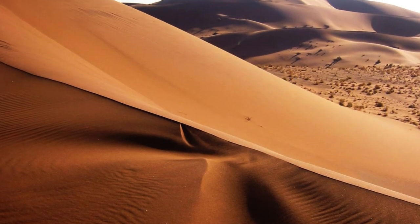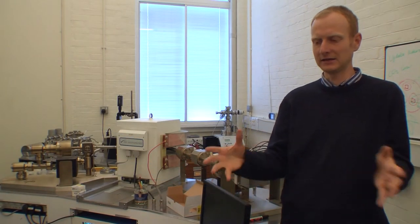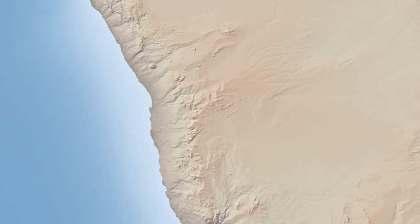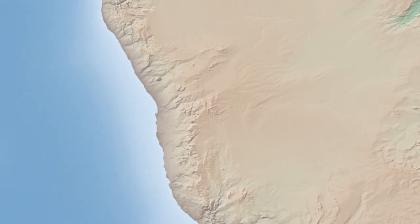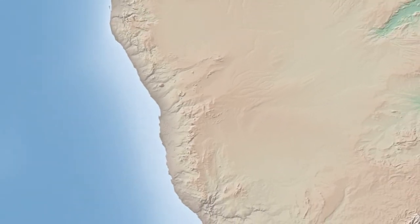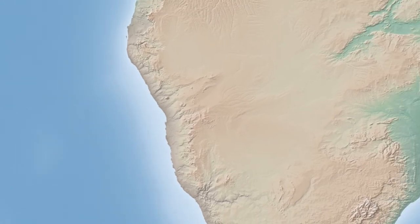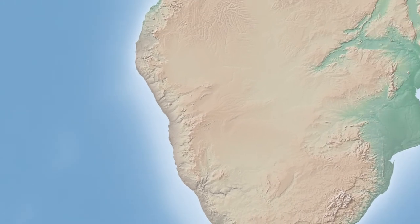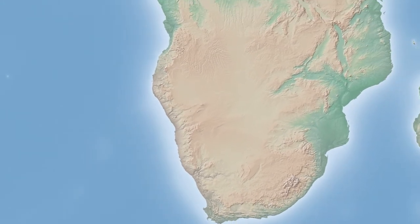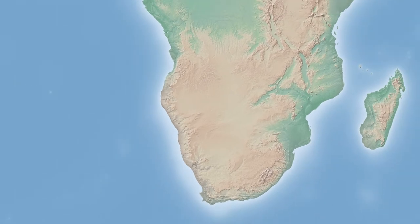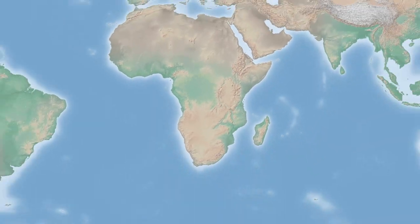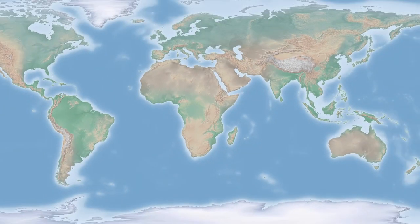We know that the Namib Sand Sea has been there for a long time because climatically it's very stable with dry conditions there. But we didn't know that the sand itself was that old, because there have been sea level changes, glaciations, and all kinds of things happening. The sand has been sitting there for a very long time.